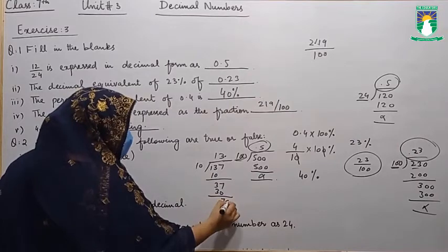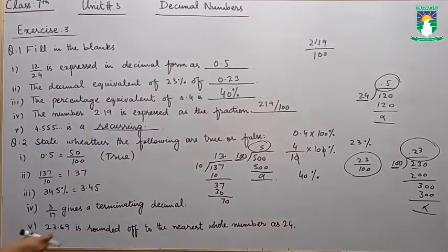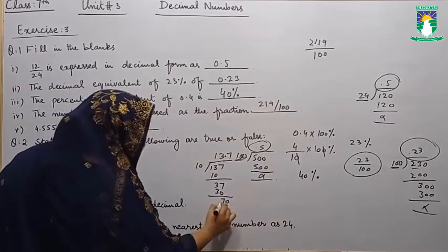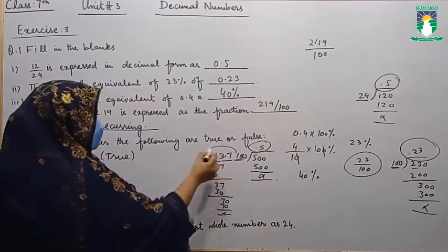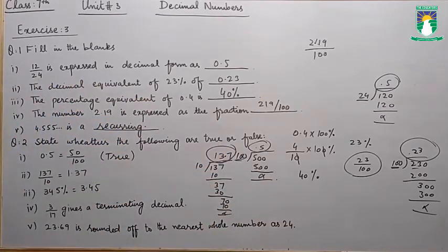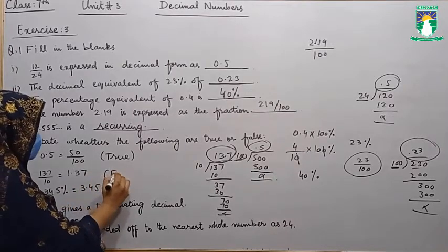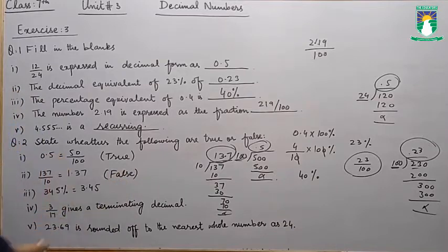We put the decimal point here and 0. Now 10 sevens are 70. The answer is 13.7, but the statement says 1.37 — so it is a false statement.